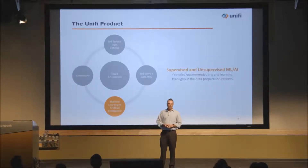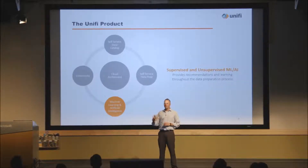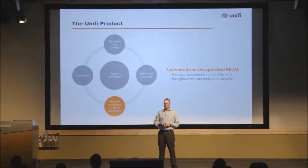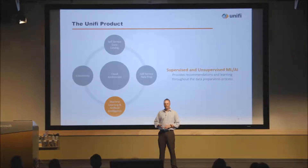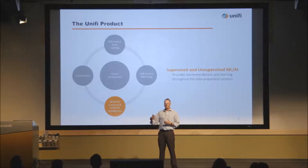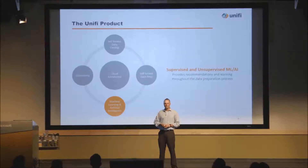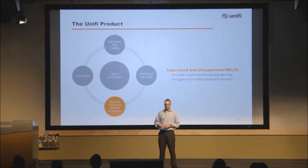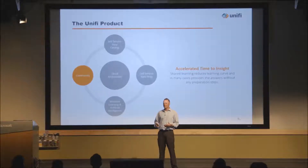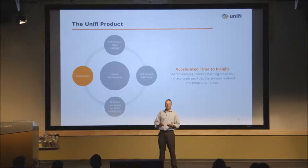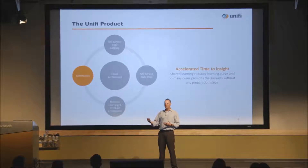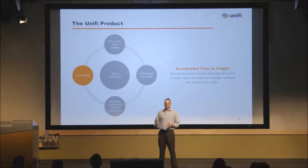We use machine learning and artificial intelligence. Through all of the metadata we acquire from all the data sources we connect to, as well as how users are using data on our platform, we make smart recommendations to the business user — things like recommending how two disparate data sets might join together, or detecting a data quality issue in a data source and asking whether you'd like us to fix it automatically. That's through a series of unsupervised and supervised techniques.